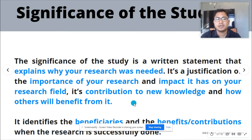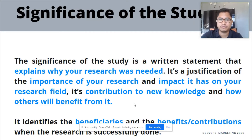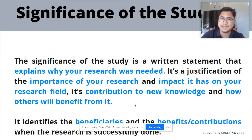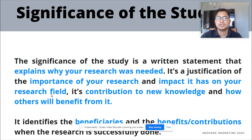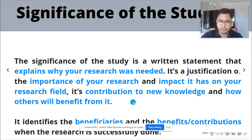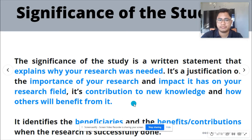As researchers, you should know well the importance and the contribution of your research once it is done. If you cannot identify that, you have to reconsider whether your research is really important and whether you really need to do it. You have to be able to identify its impact specifically to your field and your track. If you are in ABM or TVL track, you should be able to identify the contribution of this research paper to your field, and especially its contribution to new knowledge and how others will benefit from it.